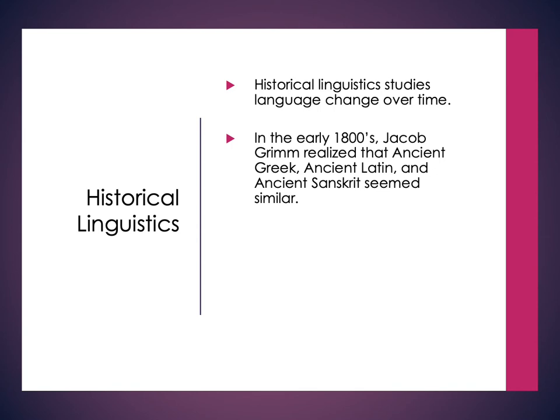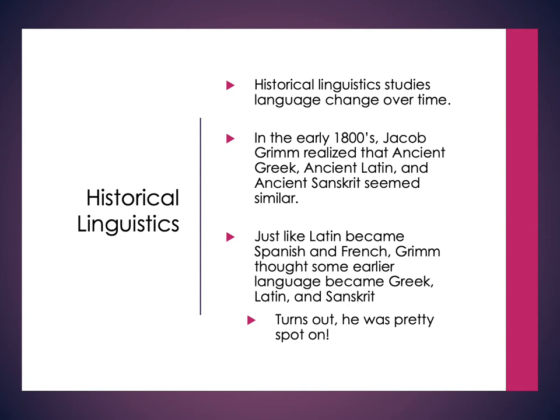Starting in the early 1800s, one of the early people who started developing these ideas was Jacob Grimm of the Grimm brothers, who realized that ancient Greek, ancient Latin, and ancient Sanskrit seemed to share similarities in some words and cognates. Just like Latin became Spanish and French, Grimm thought there must be some earlier language that eventually became Greek, Latin, and Sanskrit — and it turns out he was pretty spot on. This really led to thinking about how we can look back before written documentation to understand what forms would have been like previously.